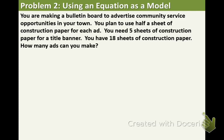You are making a bulletin board to advertise community service opportunities in your town. You plan to use half a sheet of construction paper for each ad. You need 5 sheets of construction paper for a title banner. You have 18 sheets of construction paper. How many ads can you make? Now remember, in order for us to solve this we need to first identify our variable. You look at the question. It says, how many ads can you make? That's going to be our variable. A.